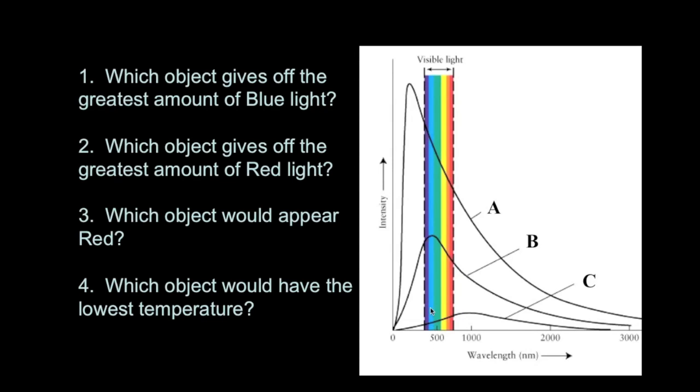And then the next question we're asking is which object gives off the greatest amount of red light? Well, if we go to the red part of the spectrum, and also look at the intensities of the light given off in each of these curves, A also has the most amount of intensity, or the greatest amount of red light.